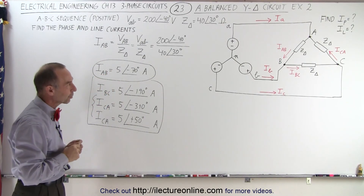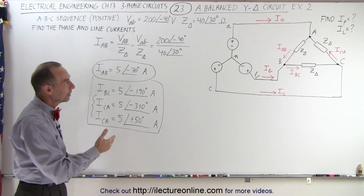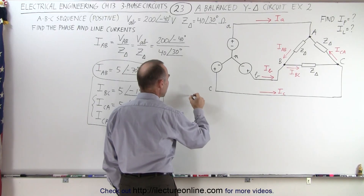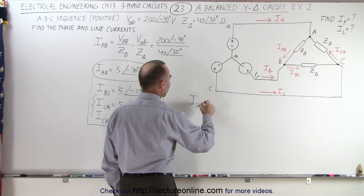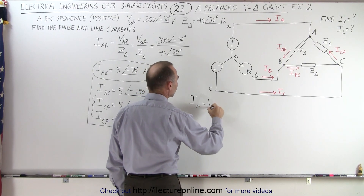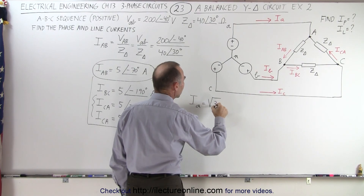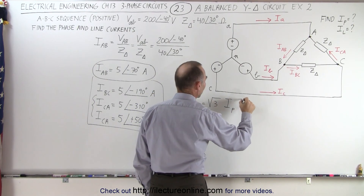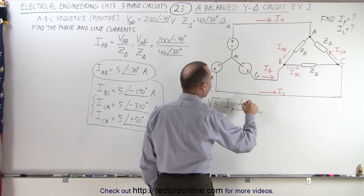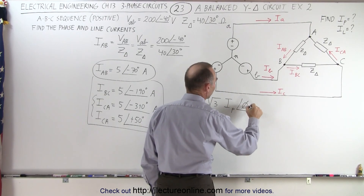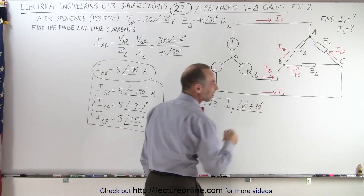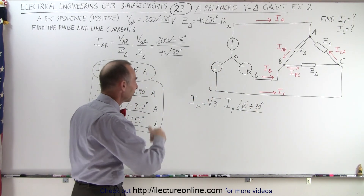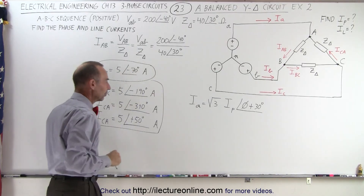Now for the line current — the current feeding the load from the source. The line current IA is equal to the square root of 3 times the phase current, with a phase angle equal to the phase current's angle plus 30 degrees. In other words, we simply add 30 degrees to the existing phase angle of the phase current.